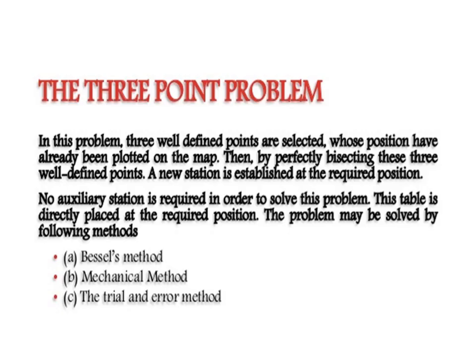In the three-point problem, three well-defined points are selected whose positions have been plotted on the map. By perfectly bisecting these three points, a new station is established at the required position. No auxiliary station is required, as in the two-point problem — the table is directly placed at the required position. The problem may be solved by the following methods: Bessel's method, mechanical method, and trial and error method.